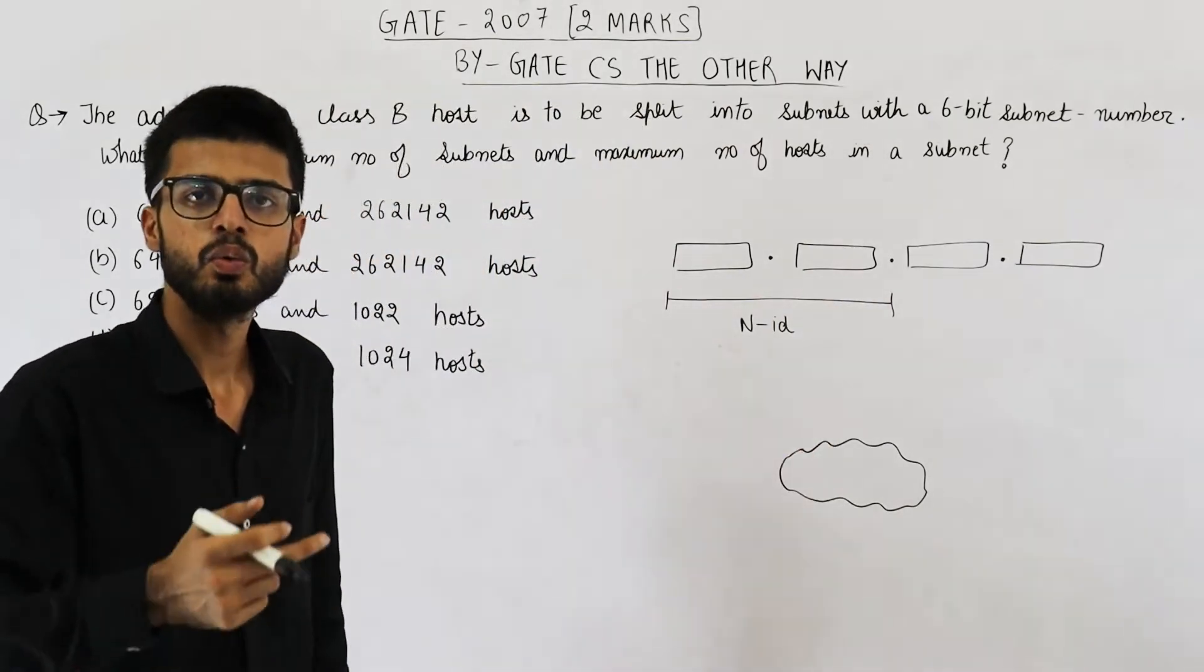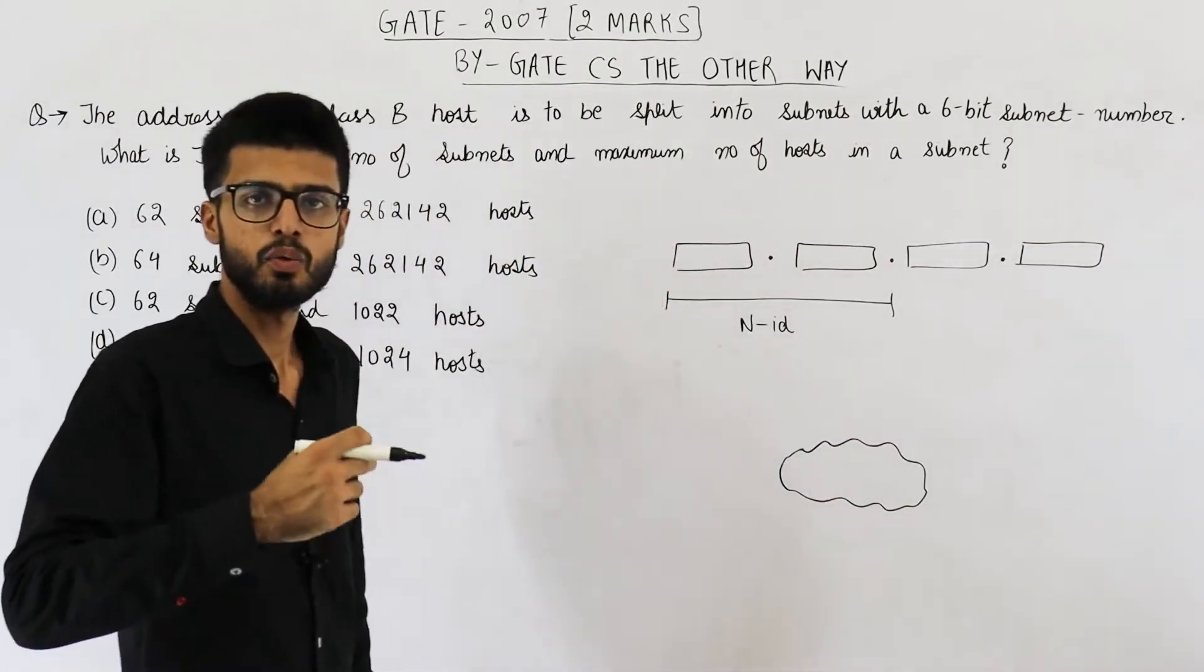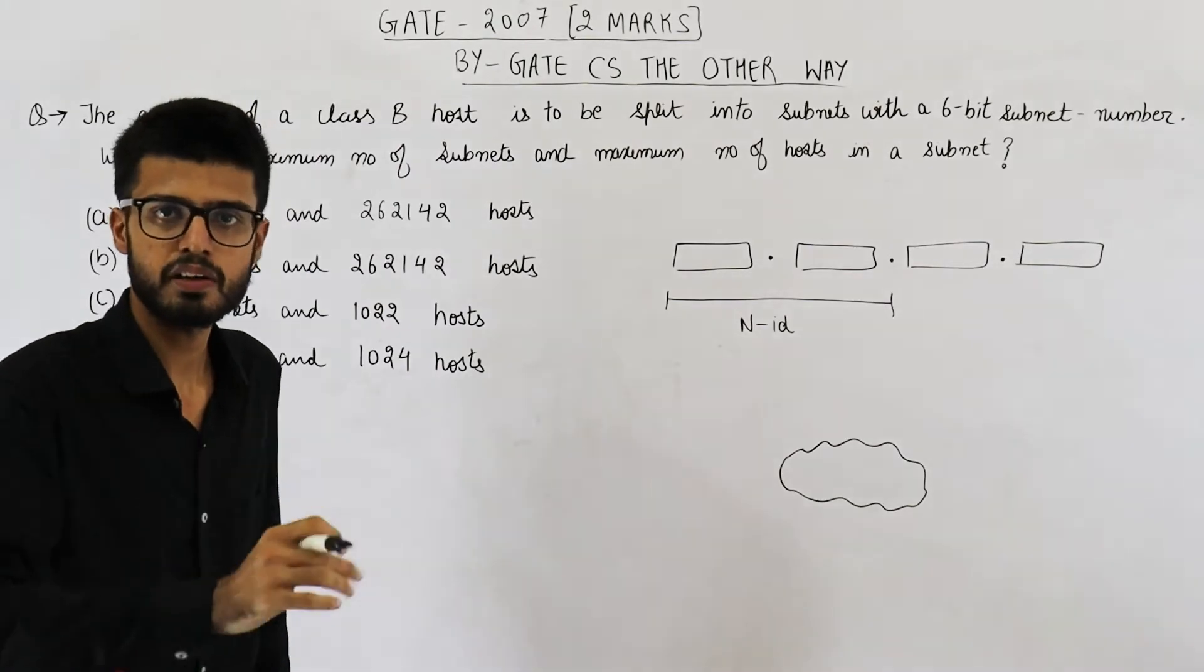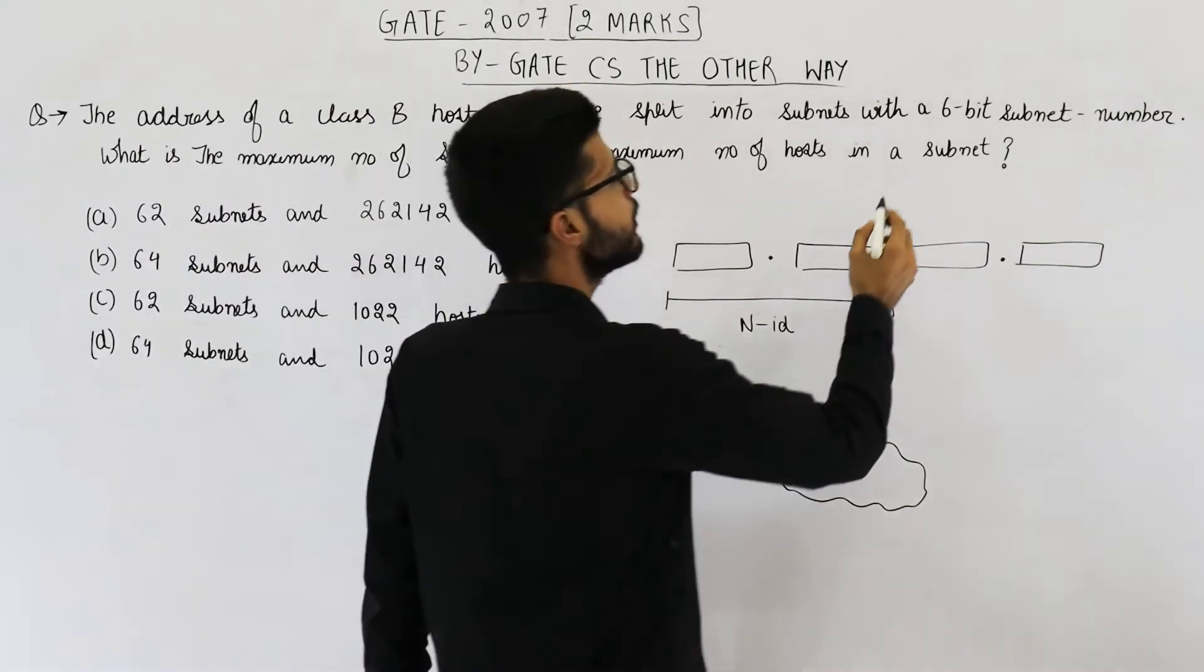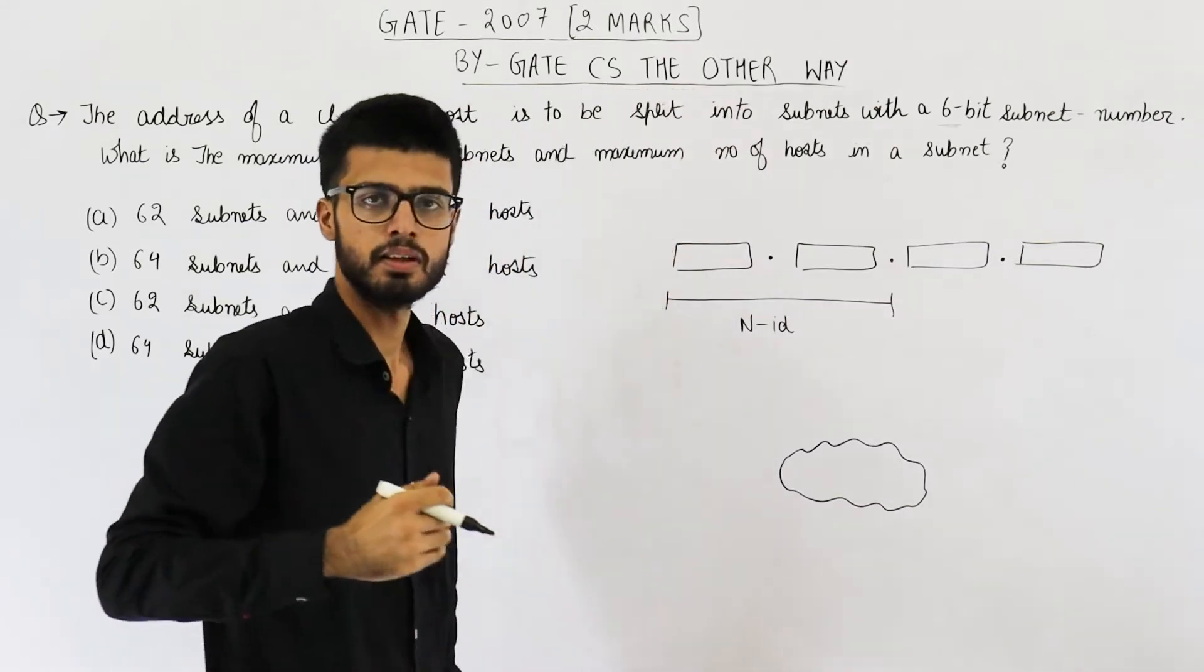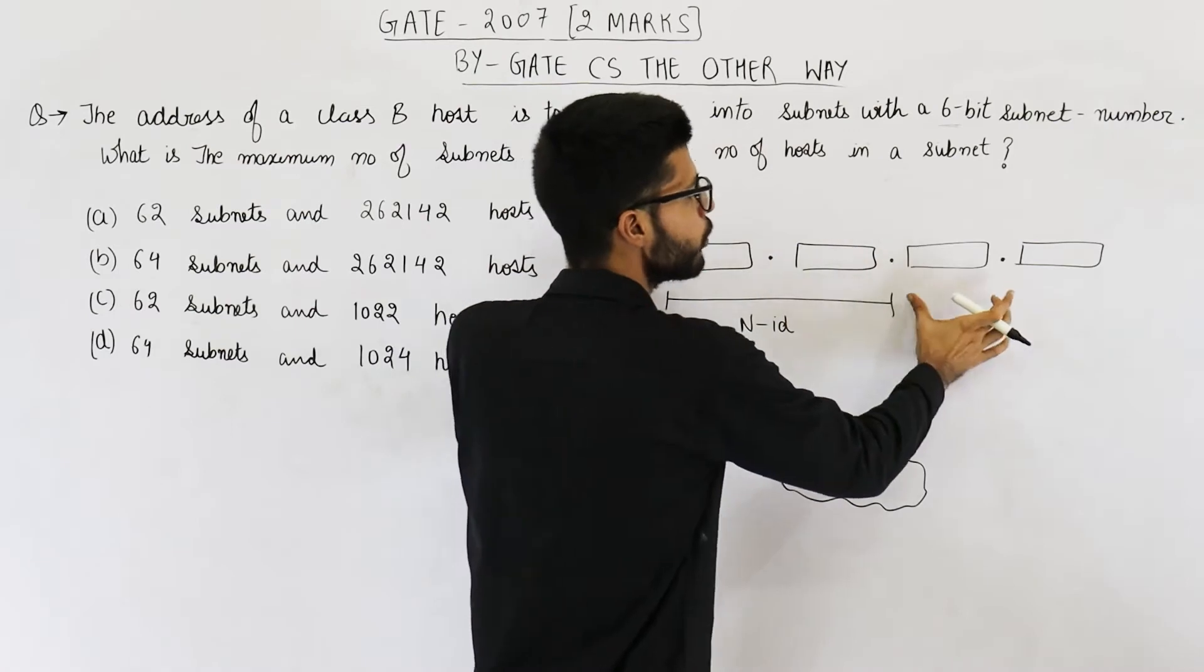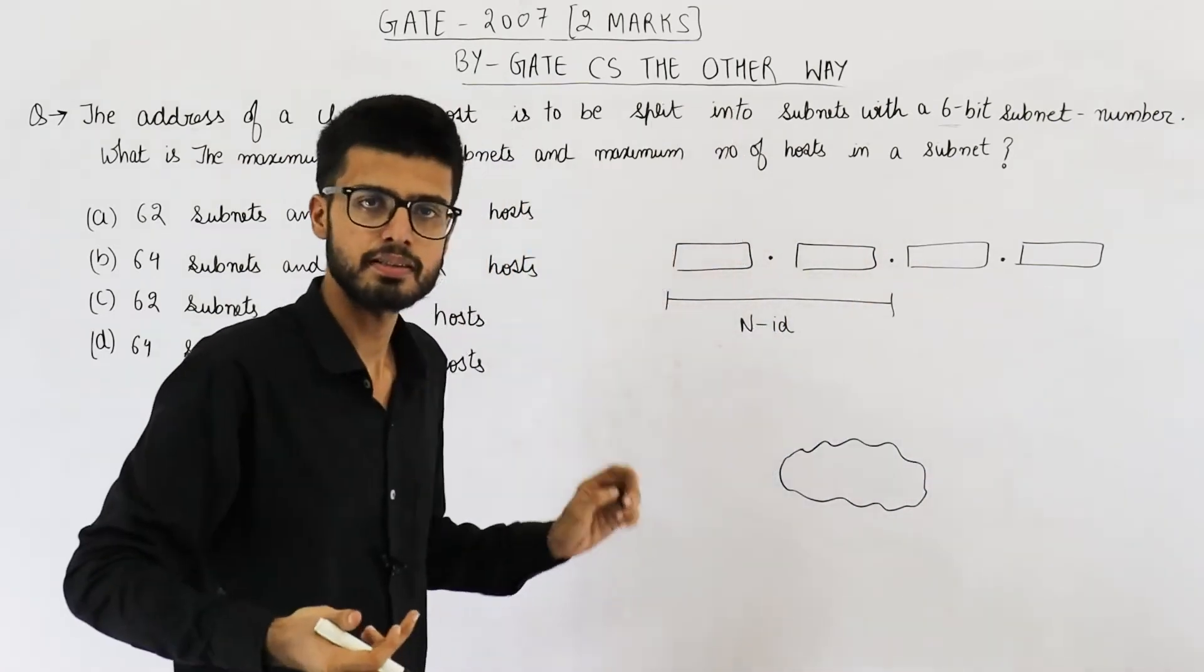After this, we are trying to create subnets. So it's divided into some subnets. We need some more bits to identify one subnet. They are saying 6 bits can be used for this purpose. That means while subnetting, we have borrowed some bits from host ID part. How many bits? 6.